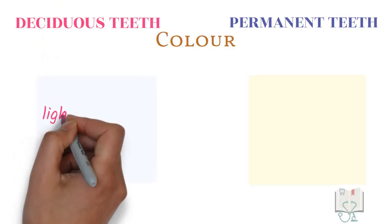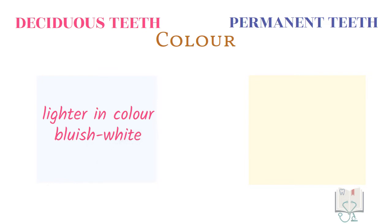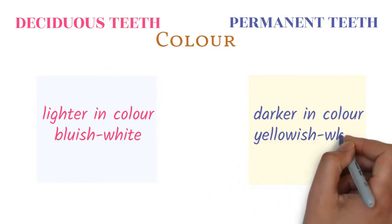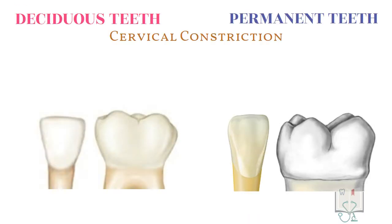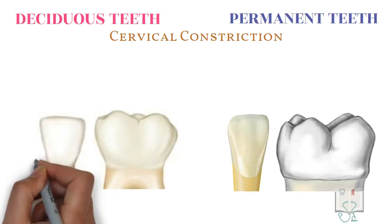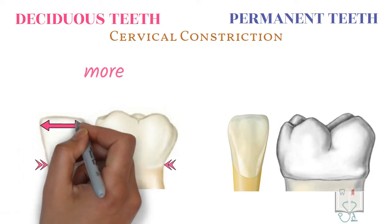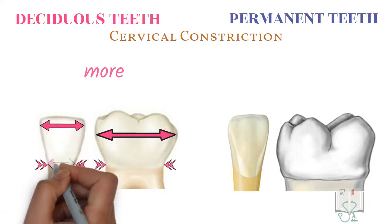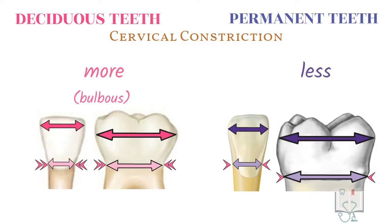In color, the crown of deciduous teeth is lighter and almost bluish-white, whereas permanent teeth are darker and almost yellowish-white in color. In deciduous teeth, a marked cervical constriction is seen — that is, the narrowing of the crown at the cervix is more pronounced, which makes the crown appear bulbous. This constriction is less in permanent teeth.